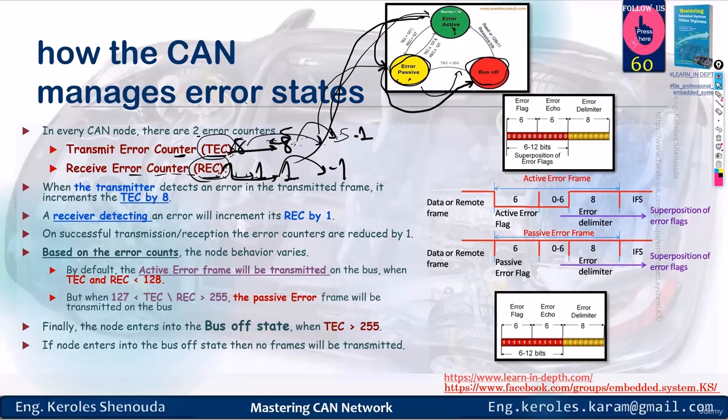To repeat: if an error occurs in your transmission, you send an error frame and increase your counter. The error frame you send indicates which state you're in, whether it's active or passive. If you're in the passive state, you send the error frame shown below in the image. If you're in the active state, you send the one above.